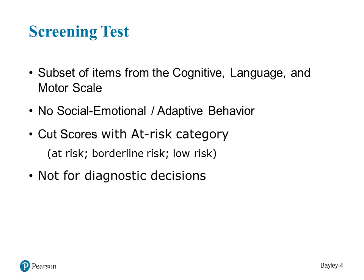The screening test is a subset of items already on the Bayley-4 in the cognition, language, and motor scales. There is no social-emotional or adaptive behavior component on the screener. Instead of composite or scaled scores, you receive a cut score indicating whether the child is at risk, borderline risk, or low risk. This is not intended to replace a comprehensive assessment or for diagnostic decision-making, but is useful when time is of the essence.